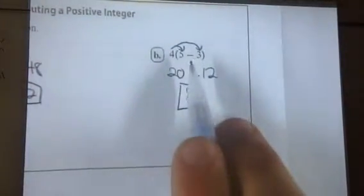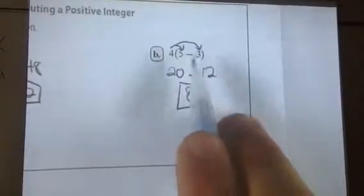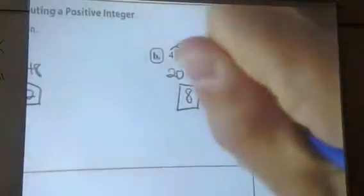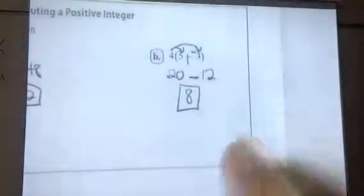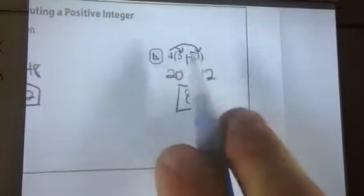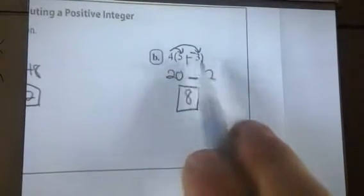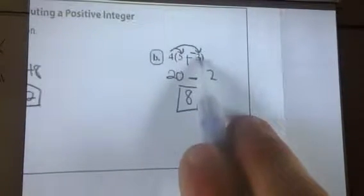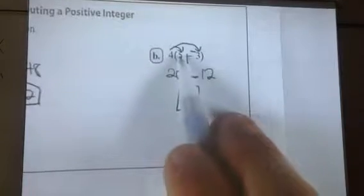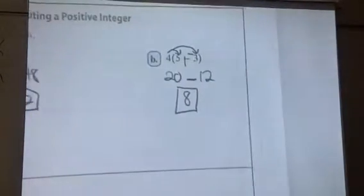One other thing to notice about this subtraction sign: subtraction is the same thing as adding a negative. Remember, change the subtraction to addition and change the sign of the second term. So when you see a subtraction sign, get used to thinking of it as a negative. So this would be like 5 plus negative 3. We'll come back to that in just a second.